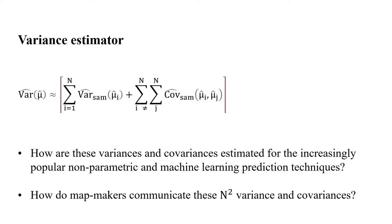The first question is how do we estimate them? The second is how do mapmakers communicate these variances and covariances? The important point here is that for a map of, say, 1,000 map units, there are a million variances and covariances. So the number of these covariances and variances that need to get communicated gets very large. How do mapmakers communicate that in an efficient manner?